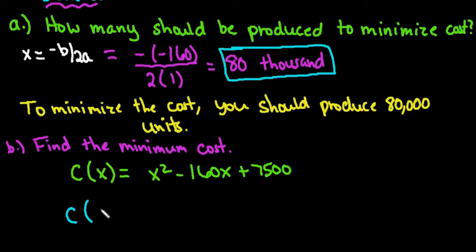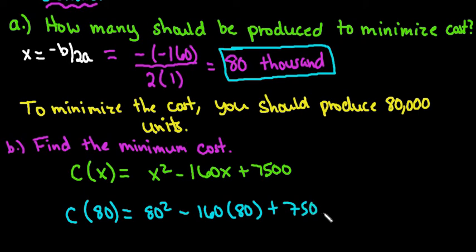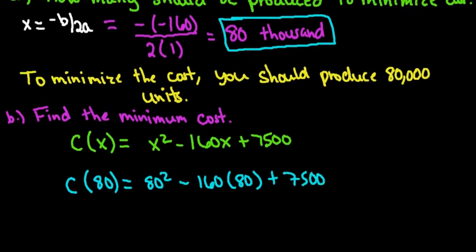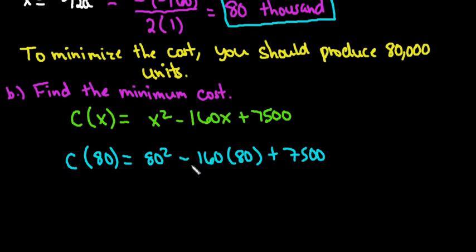We're just going to see what is our cost when we produce 80. We would plug this in: we would have 80² - 160 times 80 + 7500. If we work this out, we end up with $1,100.